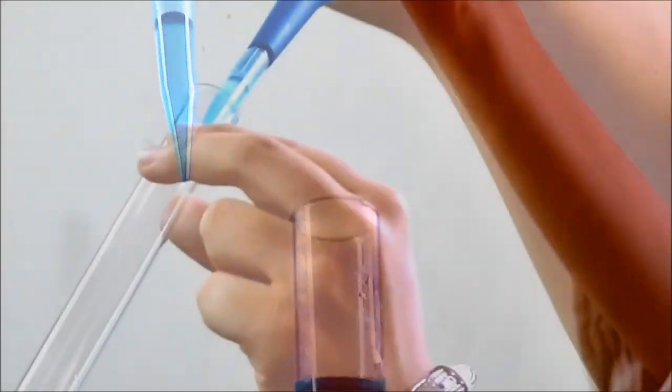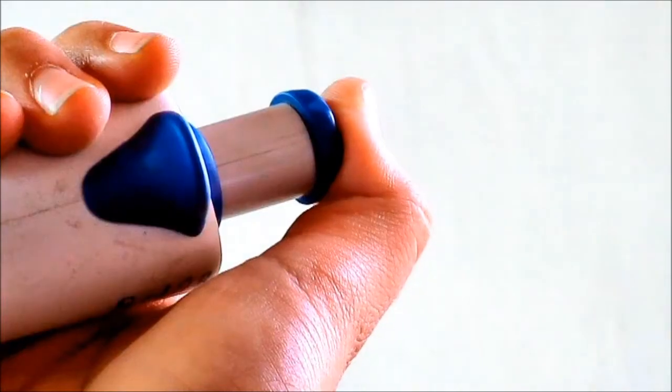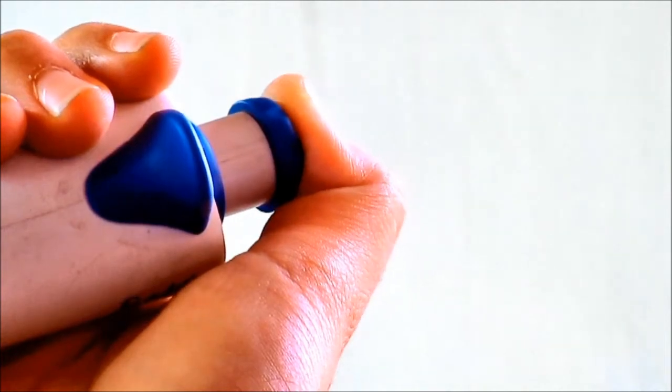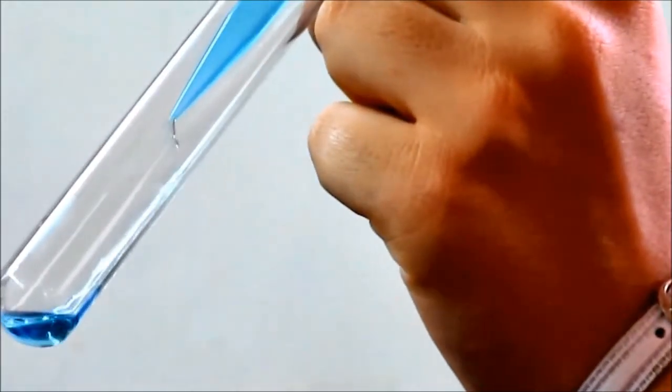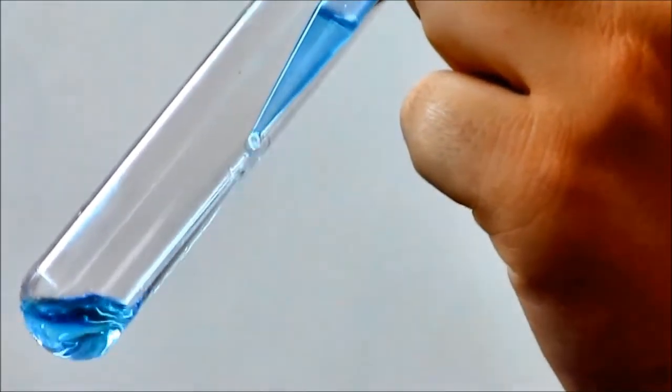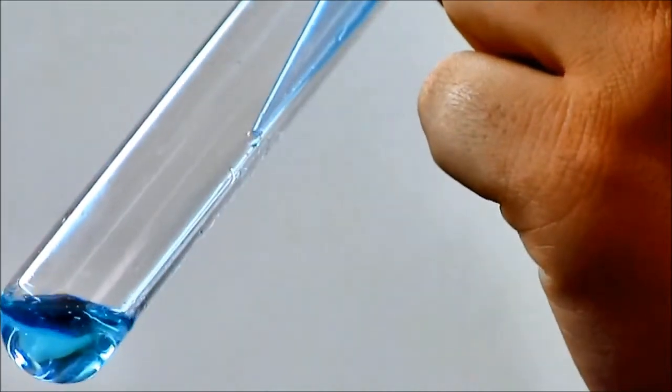The sample is then unloaded by pressing the volume adjustment knob. Once the whole liquid has been ejected out, the volume adjustment knob is released.